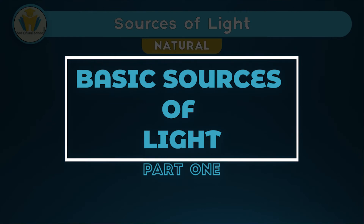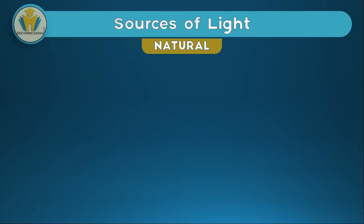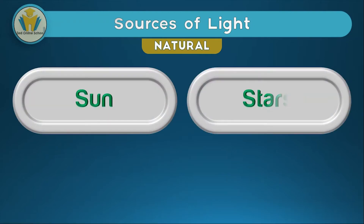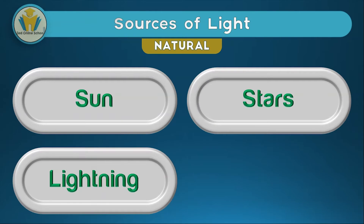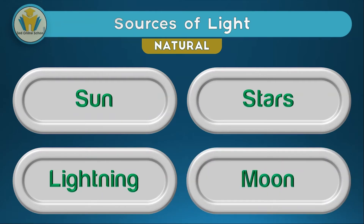Let's talk about sources of light. There are basically two kinds of sources of light. In this video we decided to divide them as natural sources of light and artificial sources of light. Natural sources of light are those kinds of sources that are there naturally — no one makes them, they are not related to man making that light, they just happen in nature. For example, we've got the sun, the stars, lightning, and the moon.